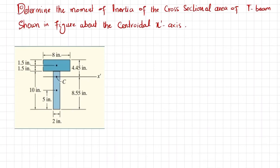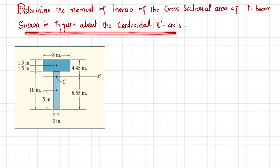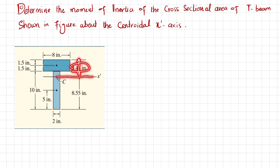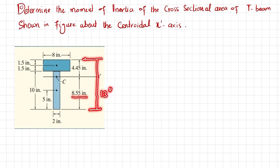Welcome back. This example is used to show the moment of inertia of a cross-section. The problem statement is: determine the moment of inertia of the cross-sectional area of a T-beam shown in the figure about the centroidal axis. The width of this T-beam is 8 inches, the thickness of the web is 2 inches. From the neutral axis to the topmost point is 4.45 inches, and from the neutral axis to the lowermost point is 8.5 inches, giving a total length of 13 inches.